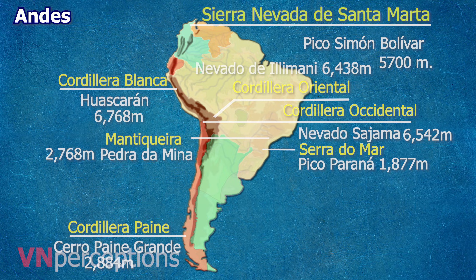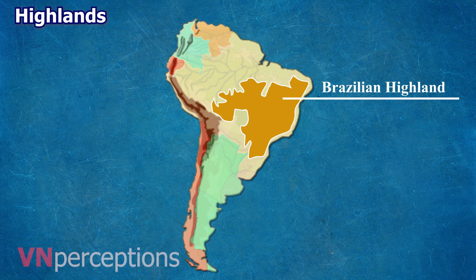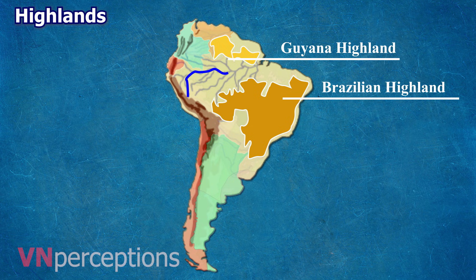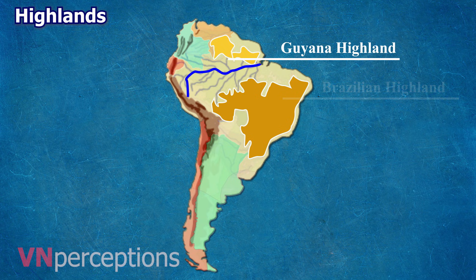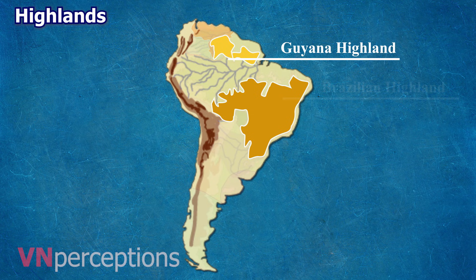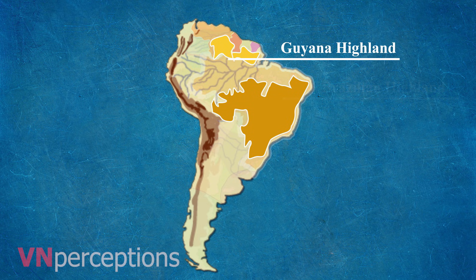South America has two principal highlands: the Brazilian Highlands and the Guiana Highlands. The Brazilian Highlands are located south of the Amazon River in Brazil, made up of low mountains and plateaus that rise to an average elevation of 1,006 meters. The Guiana Highlands are located between the Amazon and Orinoco rivers. The heavily forested plateau of the Guiana Highlands covers southern Venezuela, French Guiana, Guyana, northern Brazil, and a portion of southeastern Colombia.